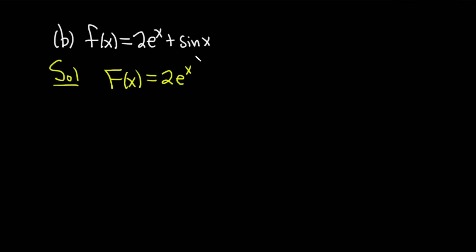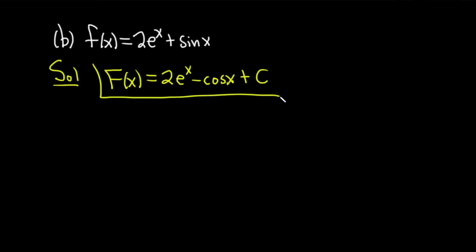Well, the derivative of cosine is negative sine, so here we need a negative cosine. You can check: take the derivative of negative cosine and you get negative negative sine, which is just sine. And don't forget the plus C at the very end. So the antiderivative is 2e to the x minus cosine x plus C.